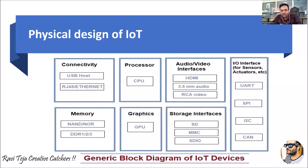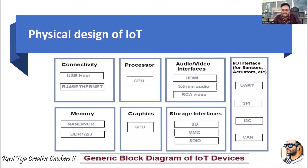For input/output interfaces for sensors and actuators, we have UART (Universal Asynchronous Receiver Transmitter), SPI (Serial Peripheral Interface), I2C (Inter-Integrated Circuits), and CAN (Controller Area Networks). These are used for plug-and-play of sensors or actuators — such as motors or environmental sensors capturing various parameters. Almost all IoT devices will have this kind of setup where the whole data is transferred through a network using the internet. This is the physical design of an IoT in short.